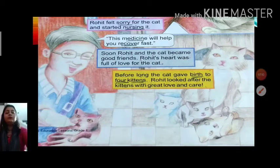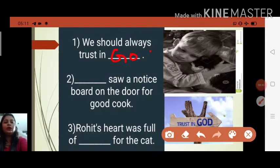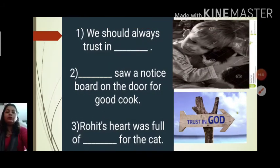Now come to the chapter work, which means you all are going to do the work related to the chapter. Chapter 1, we should always trust in God. Blank saw a notice board on the door for good cook. Yes children, who saw? Mr. Cat. So there you will write Mr. Cat saw. C-A-T. Cat saw a notice board on the door for good cook.